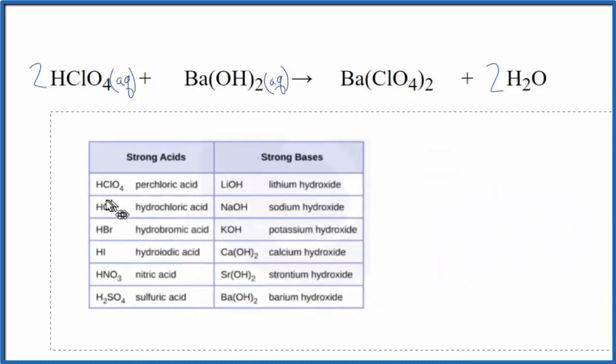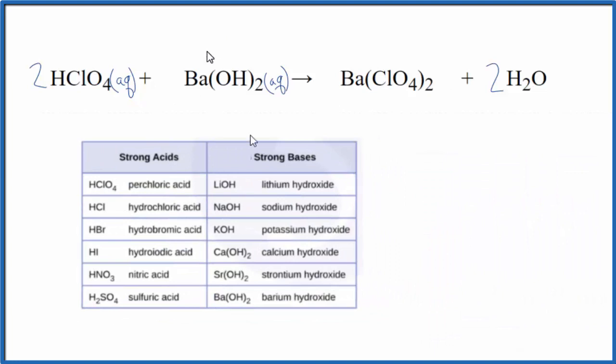If you need some help memorizing the common strong acids and strong bases, this table here is really helpful. We can see our perchloric acid, and then we can see our barium hydroxide, strong acid and strong base.